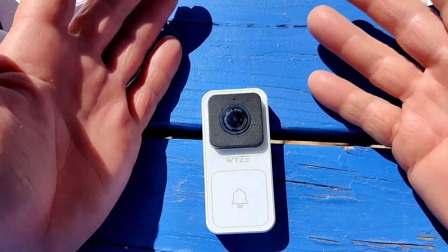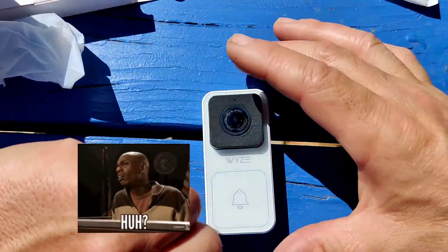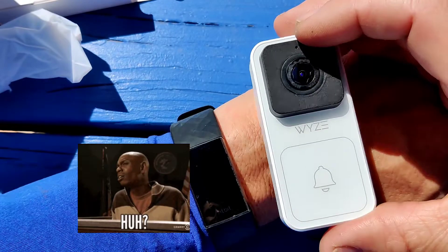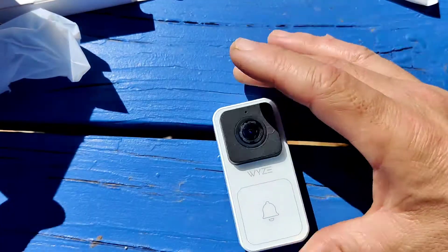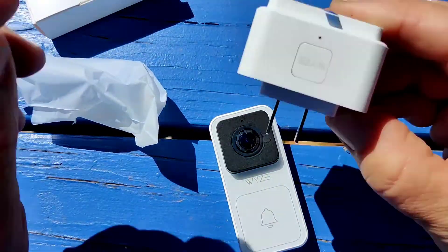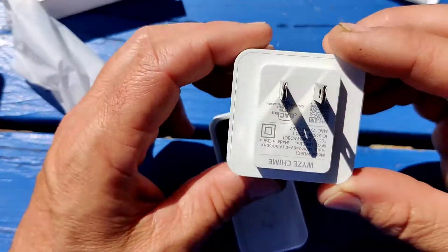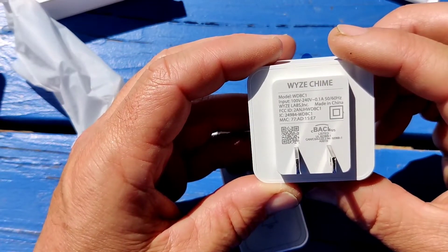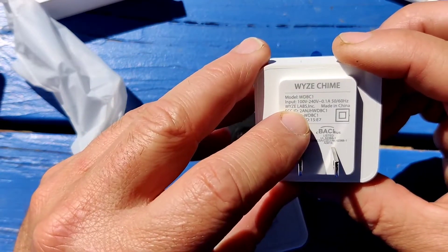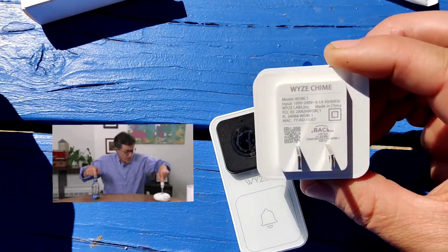I'll put it next to my Fitbit. Look how small this thing is. That's a Fitbit 3. It's tiny, crazy small. The chime is actually bigger. This is the chime for it. Just plugs into 120 volts. Surprisingly this does a wide range of voltage, 100 volts to 240 volts.